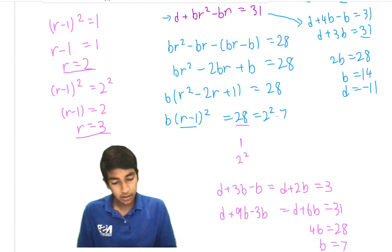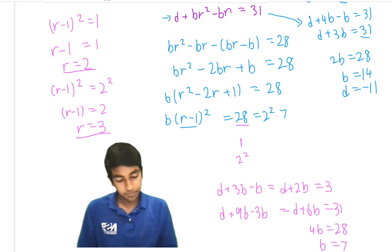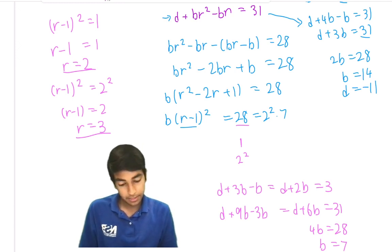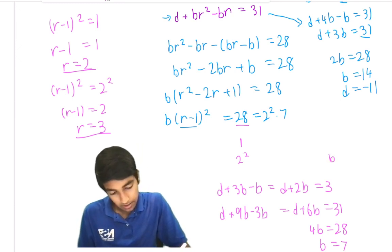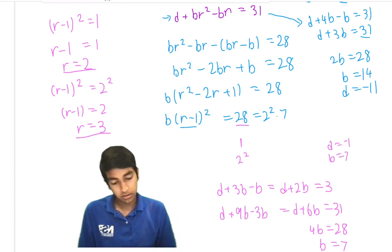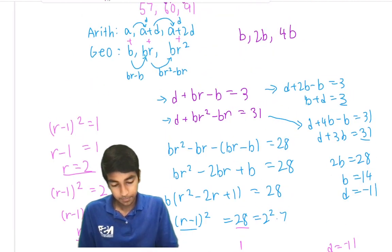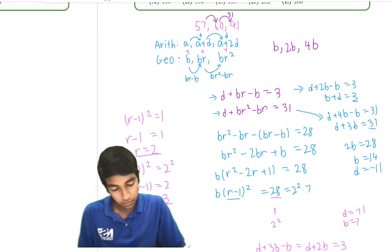And in this case, b equals 7, but d is negative 11. And we have r equals 3 in this case.